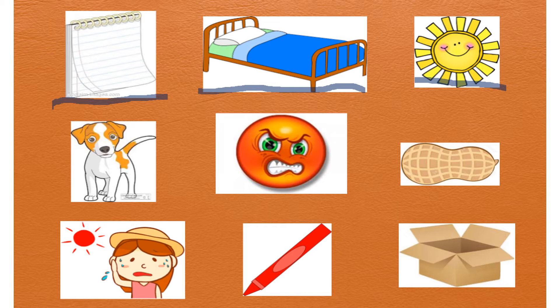Here we go: /p/ /a/ /d/. Pad, that doesn't quite sound right, does it? Bed? Hmm. Sun? Hmm. Bed. /b/ /e/ /d/. That's it, that's the match. Bed.